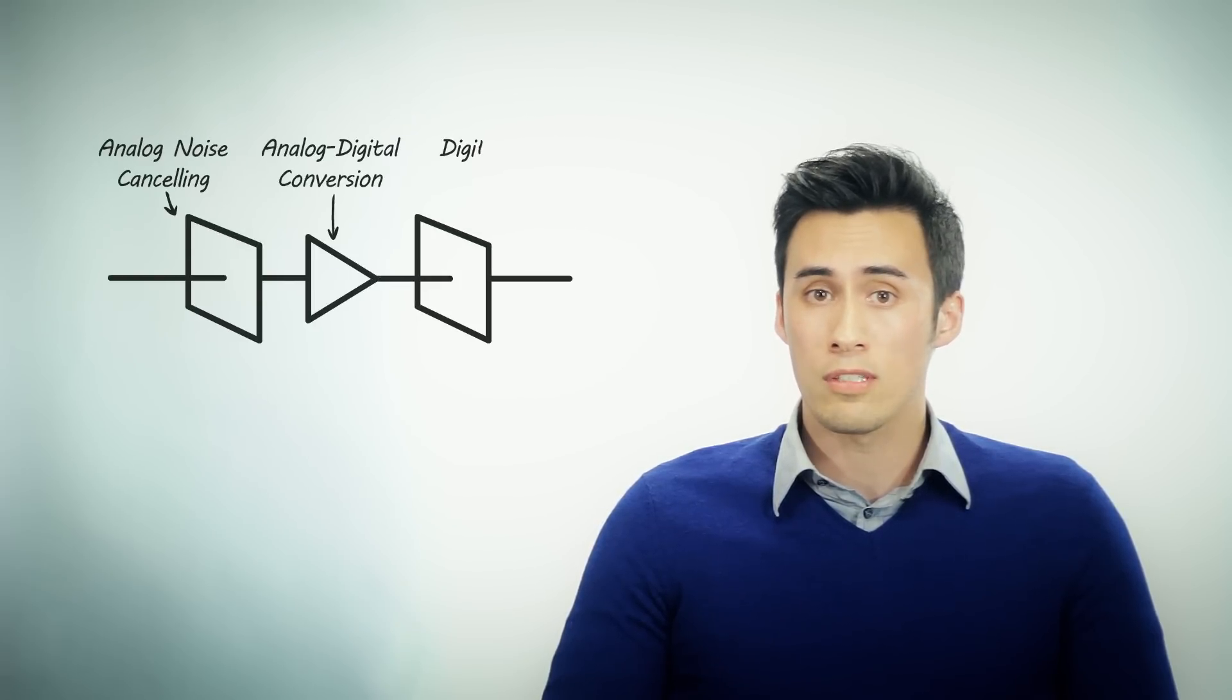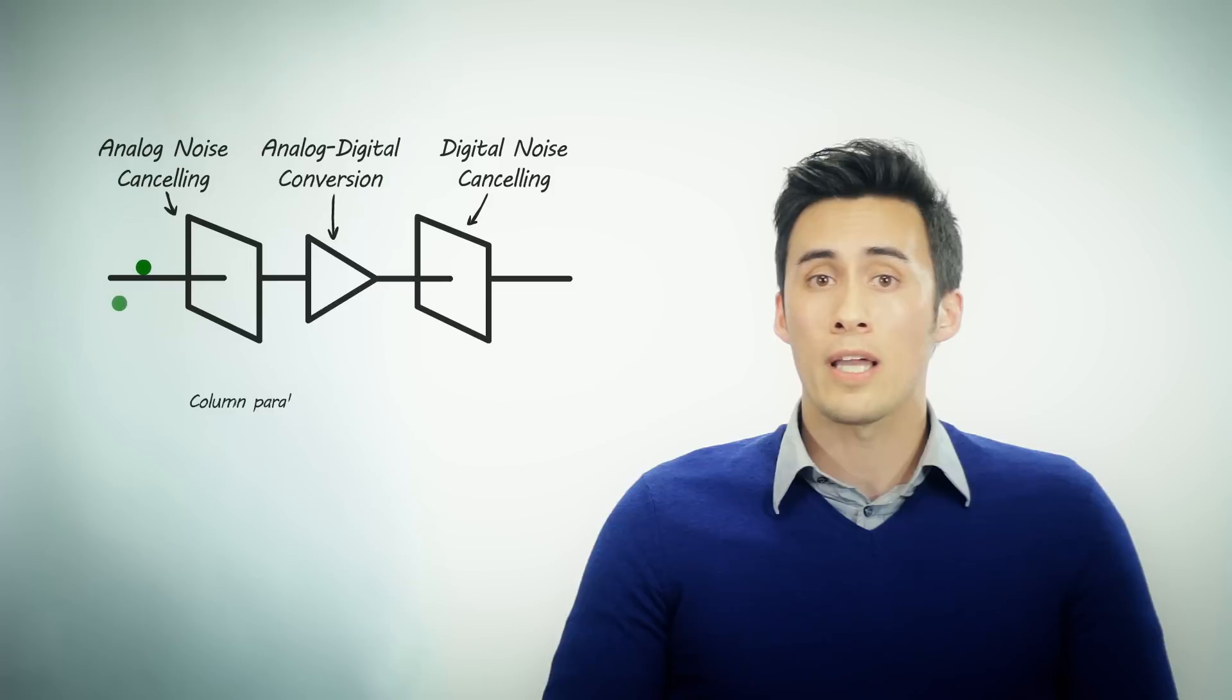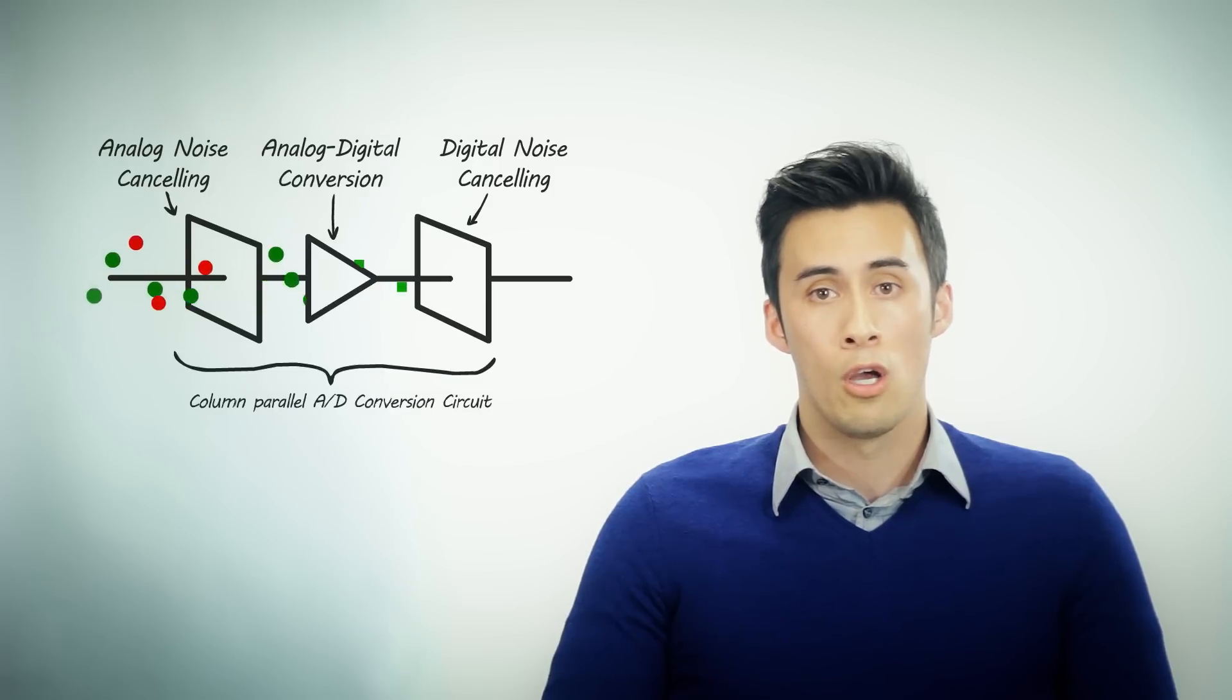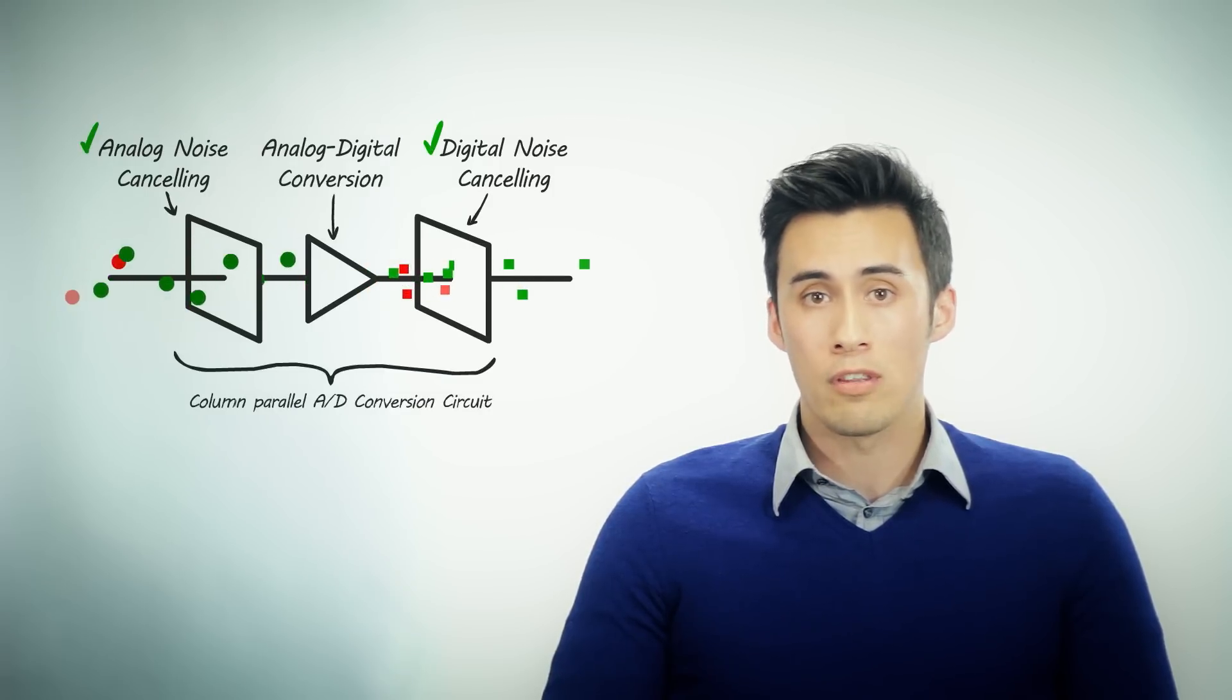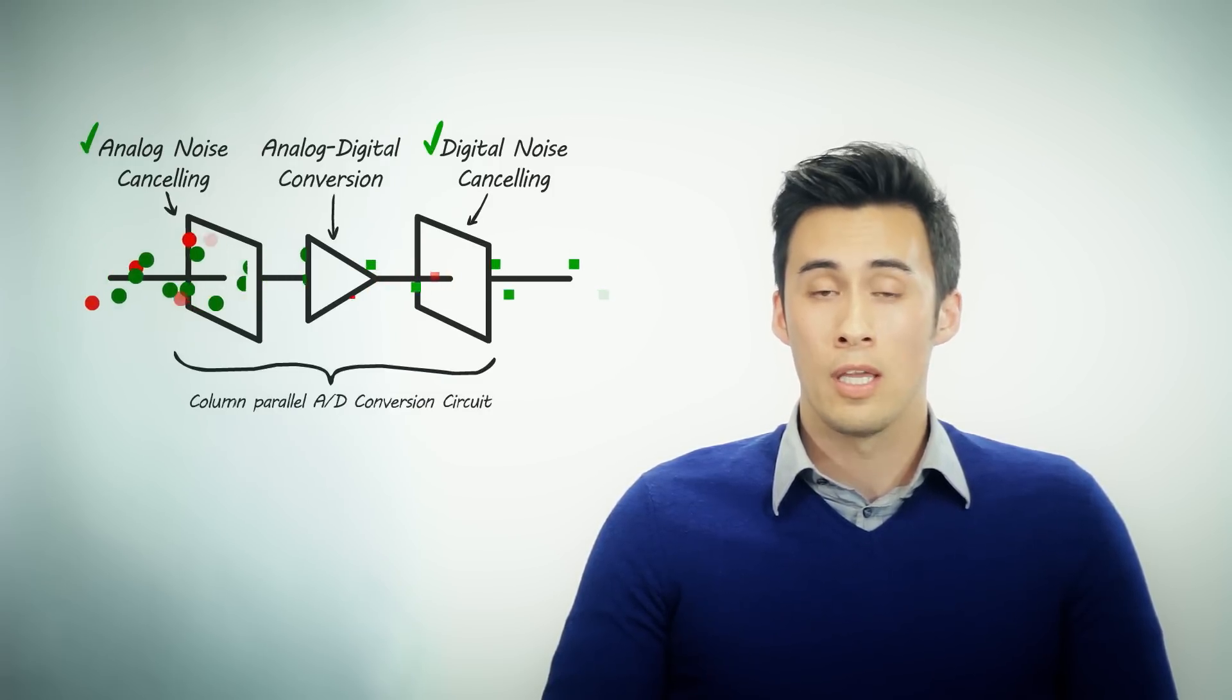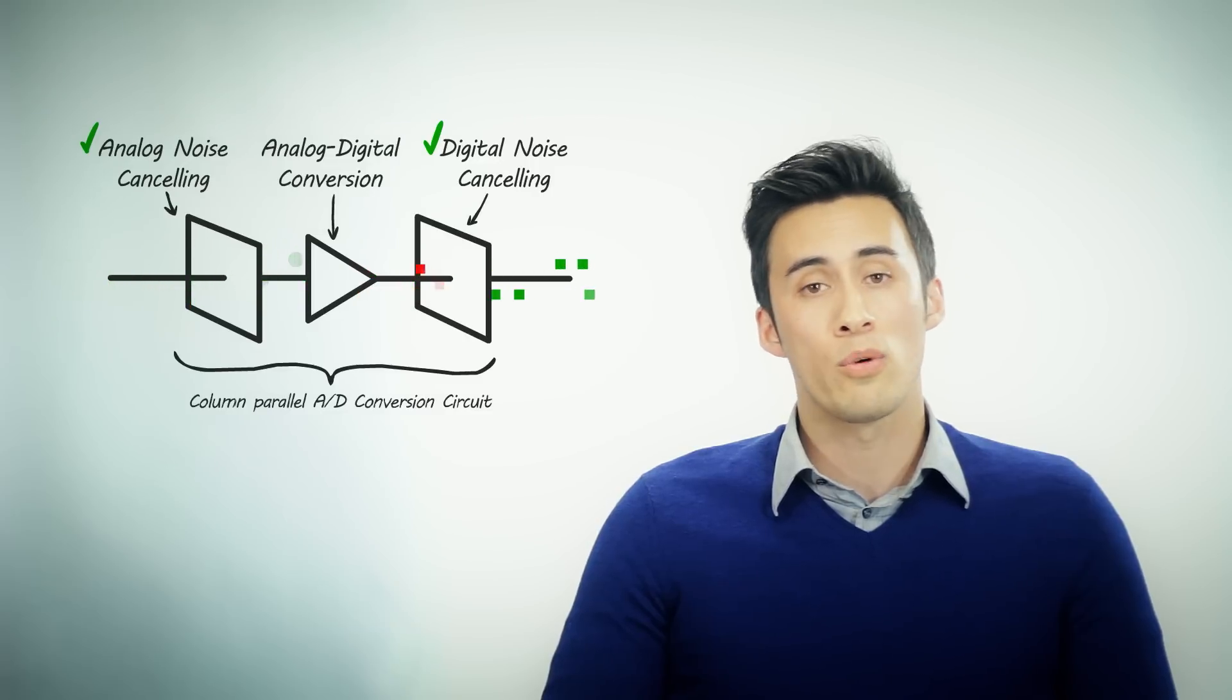In addition, Exmor sensors have much lower noise than conventional CMOS sensors. Not only does Sony shield areas of potential noise contamination, but they also apply two stages of noise reduction—one before and after the analog to digital conversion—giving you a much cleaner image even in low light situations.